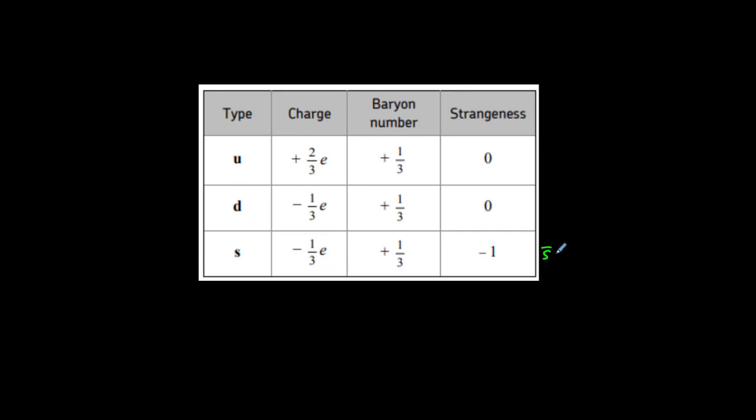For example, an anti-strange quark has a charge of plus one-third e, a baryon number of minus one-third, and a strangeness of plus one.